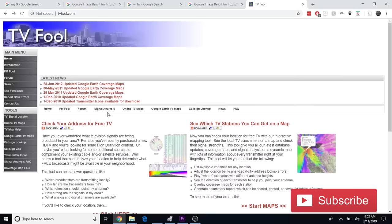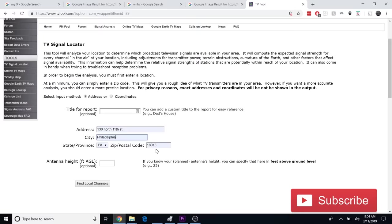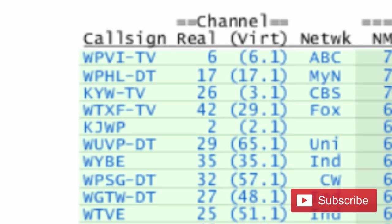One way you can find out what frequencies the TV stations are on in your area is to go to tvfool.com signal analysis and type in your address and then look for the real channel number. The virtual channel number is the number that the TV station identifies as, but the real channel number is the channel number they broadcast on.